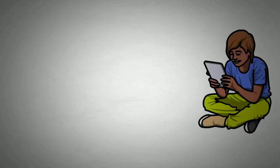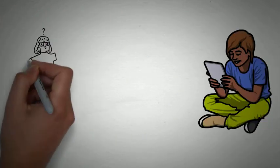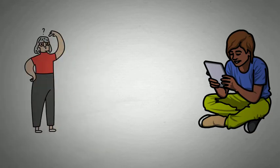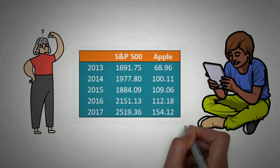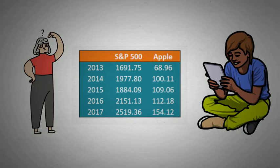And now getting into our example. This is Swetha. She is an investor. Her portfolio primarily tracks the performance of the S&P 500 and Swetha wants to add the stock of Apple. Before adding Apple to her portfolio she wants to assess the correlation between the stock and the S&P 500 to ensure that adding the stock won't increase the systematic risk of her portfolio.